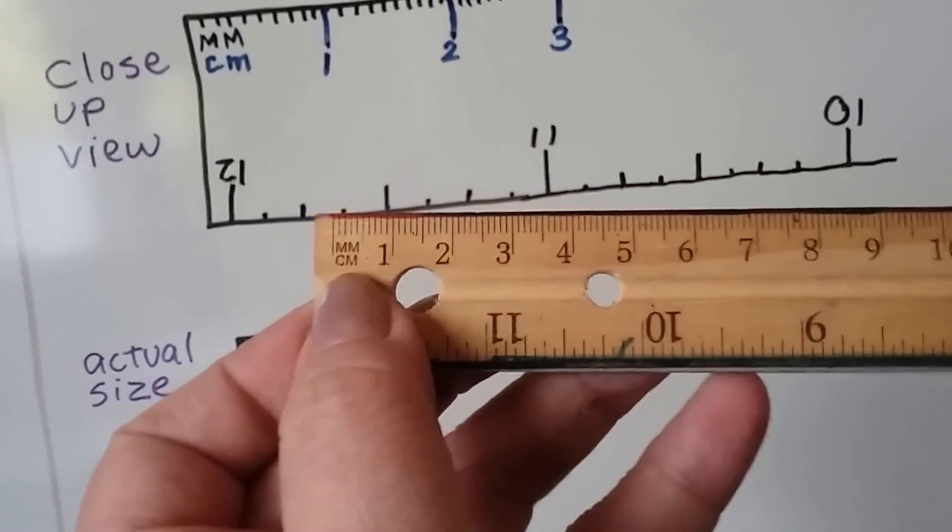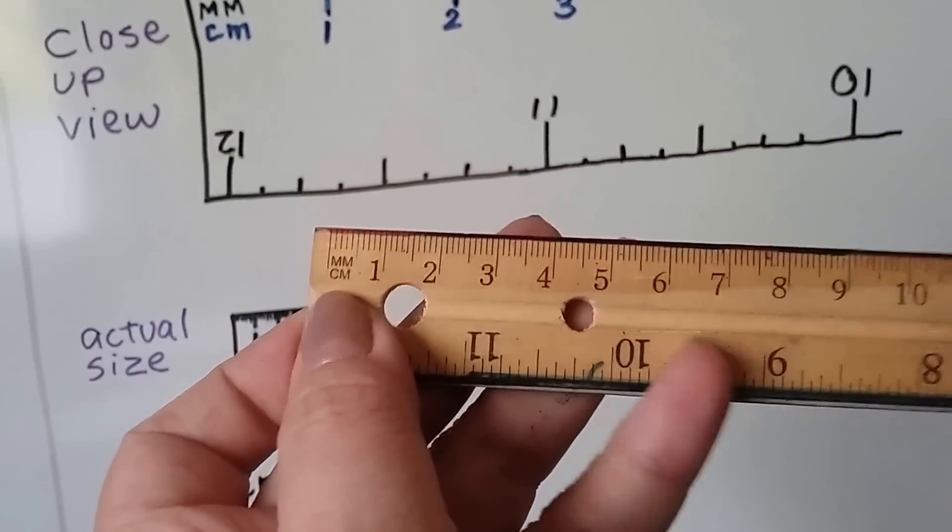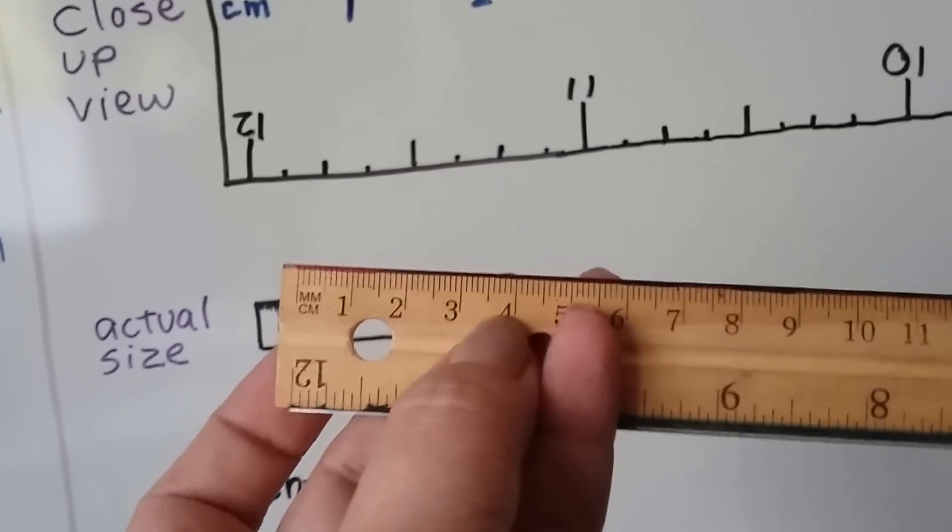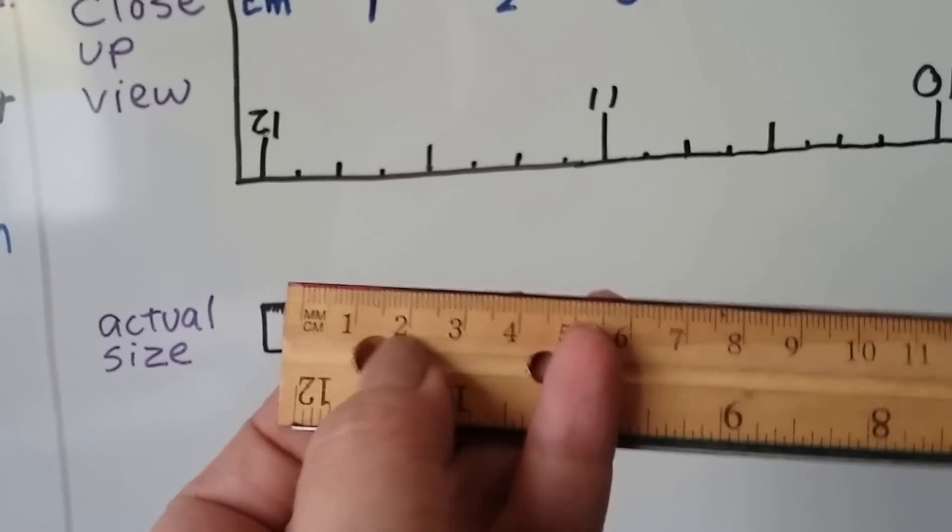You can see that the little tiny lines are millimeters. And then the one, two, three, four, these numbers are centimeters.